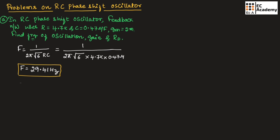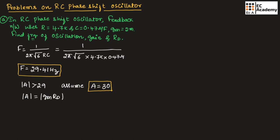Next, we need to find the gain. The gain of RC phase shift oscillator must satisfy |A| > 29, so let us assume gain A = 30. For a MOSFET amplifier, gain is given as A = gm · RD. So 30 = 2 mA/V × RD, giving us RD = 15 kΩ. We have now found the frequency of oscillation, gain, and RD.